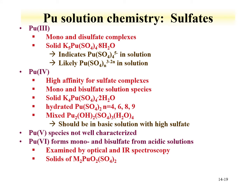A range of plutonium sulfates have been evaluated, including plutonium-3 where you get mono and disulfate complexes, and solid potassium plutonium sulfates with water have been prepared. Plutonium-4 has high affinity for sulfate, with both mono and bis sulfate complex solution species formed. The plutonium-5 species is not well characterized. Like plutonium-4, plutonium-6 forms mono and bisulfate from acidic solutions, and this compound has been examined by both optical and IR spectroscopy.